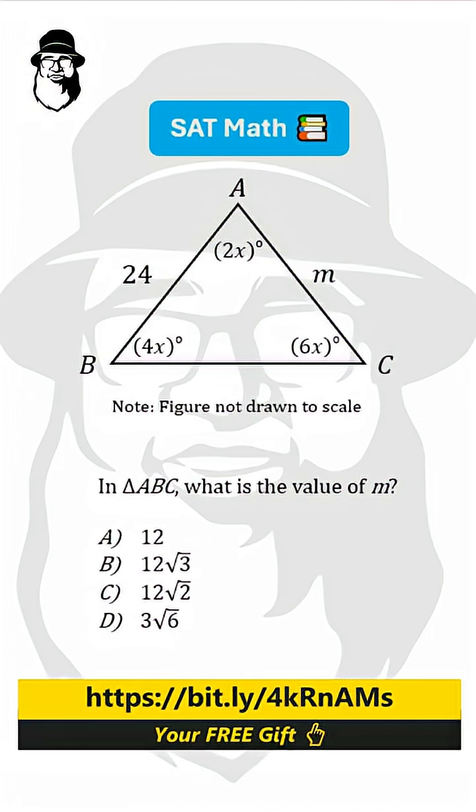Is it the most difficult SAT question? Let's see. We have here 2x, 4x, and 6x, and we know the sum of all the angles in a triangle is 180 degrees.